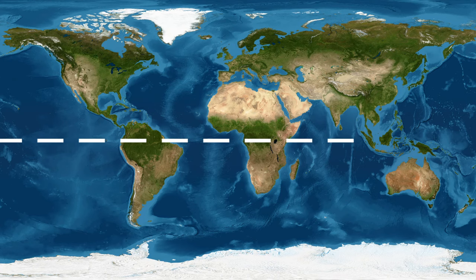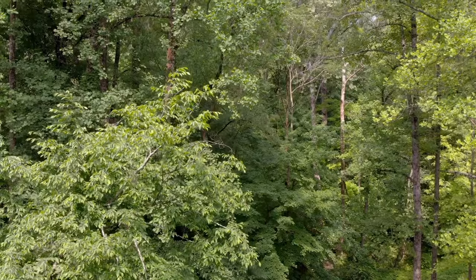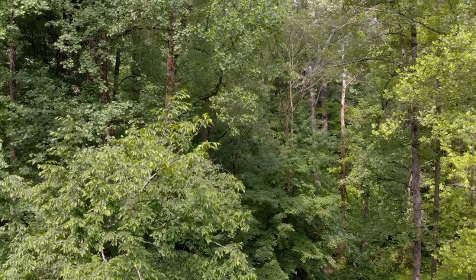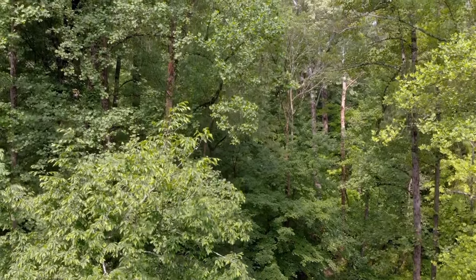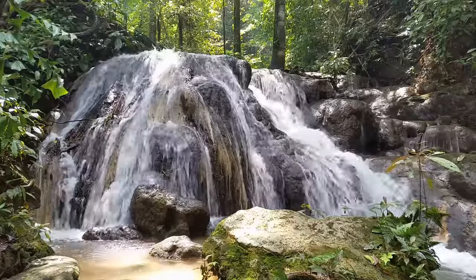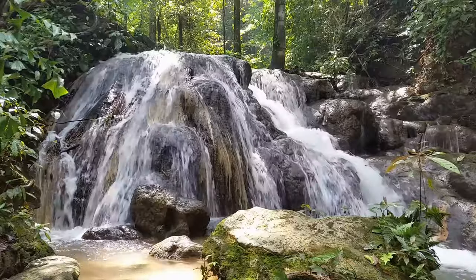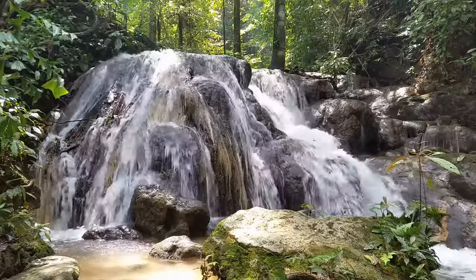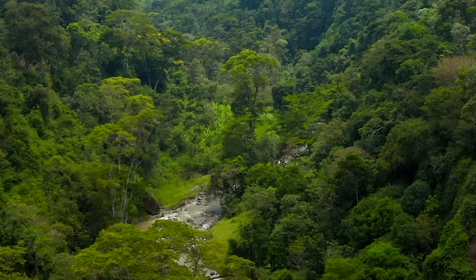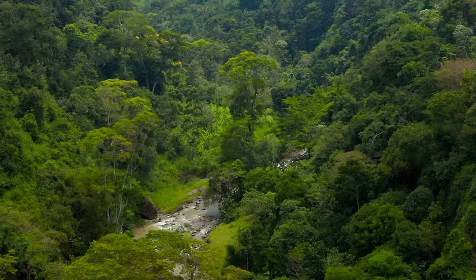Tropical Rainforests are dense forests close to the earth's equator. They are warm and moist all year round and they get lots of sunlight, although much of the sunlight is blocked by a thick canopy formed by treetops.